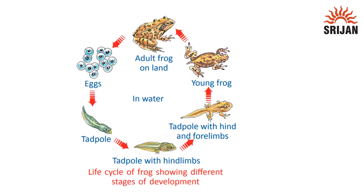Here we have the life cycle of the frog showing different stages of development. First we can see the eggs. From these eggs, a tadpole is formed, and then tadpoles get their hind limbs and forelimbs.